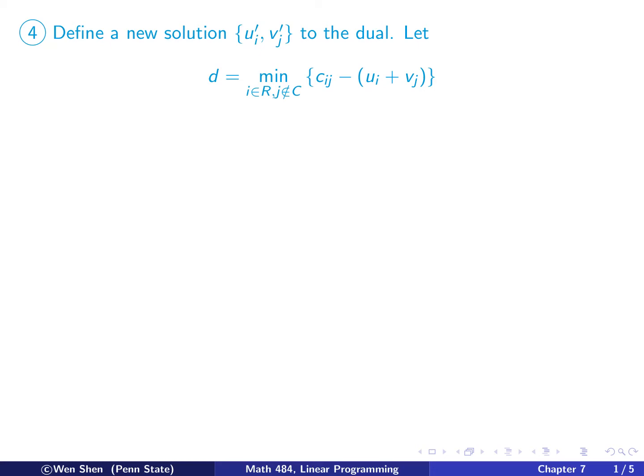Hello everyone, welcome to video 6 of chapter 7. We continue our primal dual algorithm. So at step 3b, we have constructed the set C and R where we get stuck.